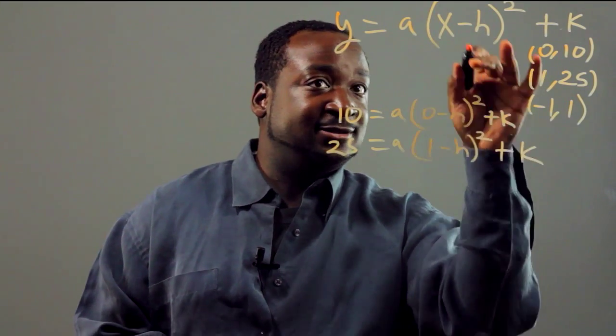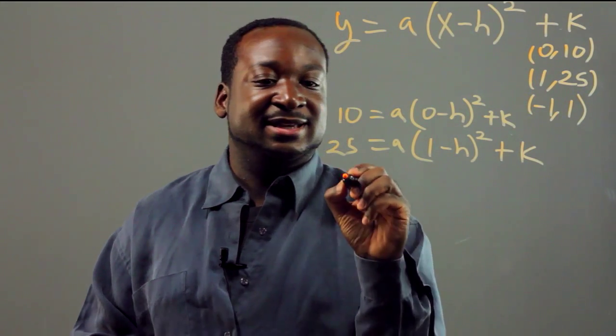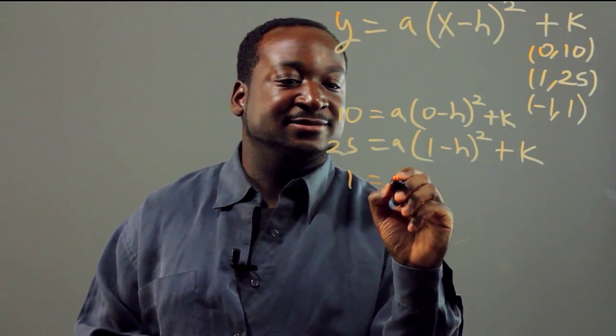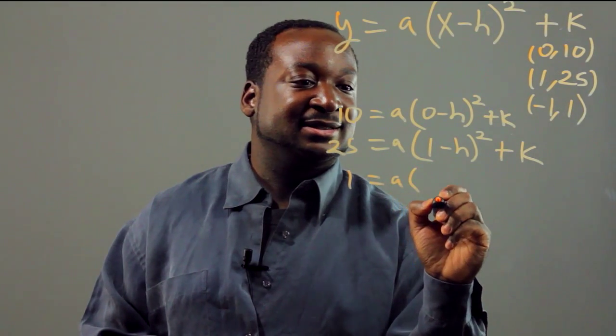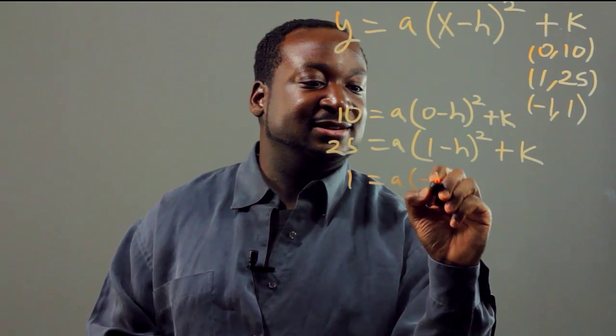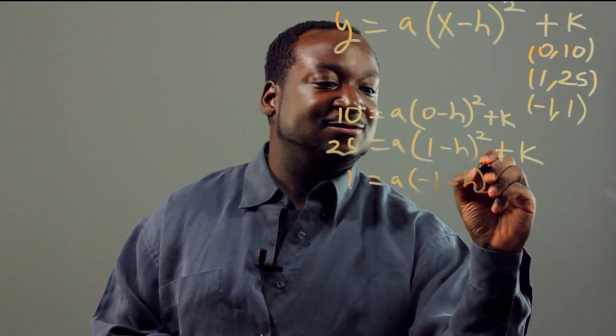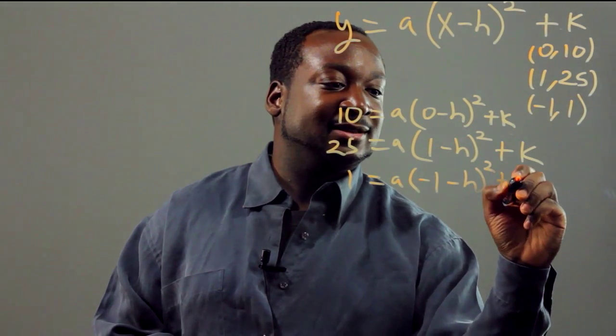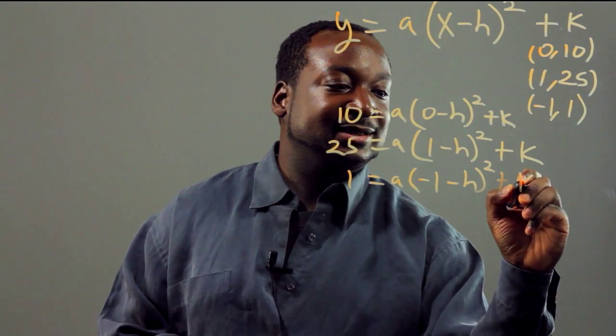If we substitute this last point, we get 1 equals a times (negative 1 minus h) quantity squared plus k.